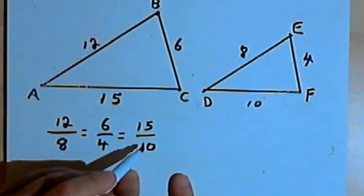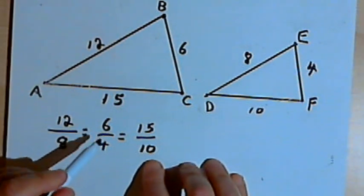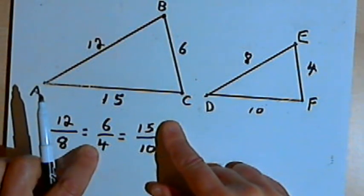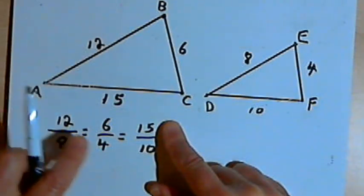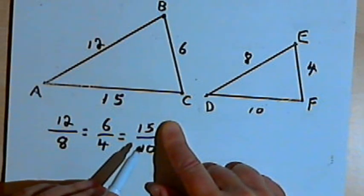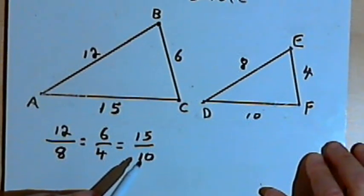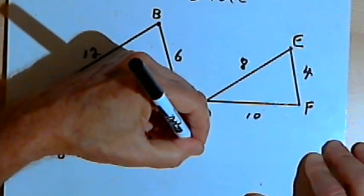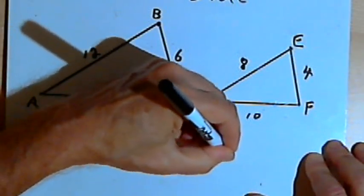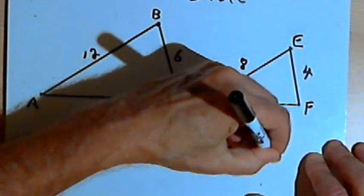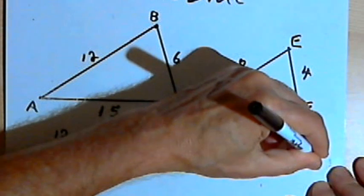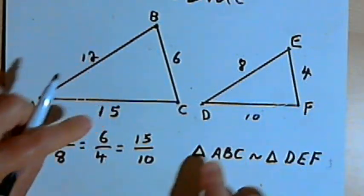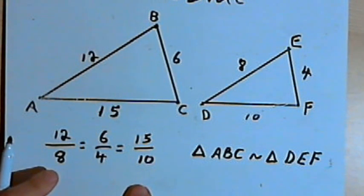Let's see if 6 over 4 equals 15 over 10. Cross-multiplying: 6 times 10 is 60, and 4 times 15 is also 60. So these three ratios are actually the same thing, meaning the three sides are proportional. We can say that triangle ABC is similar to triangle DEF, because we've shown that the ratios of their corresponding sides are all the same.